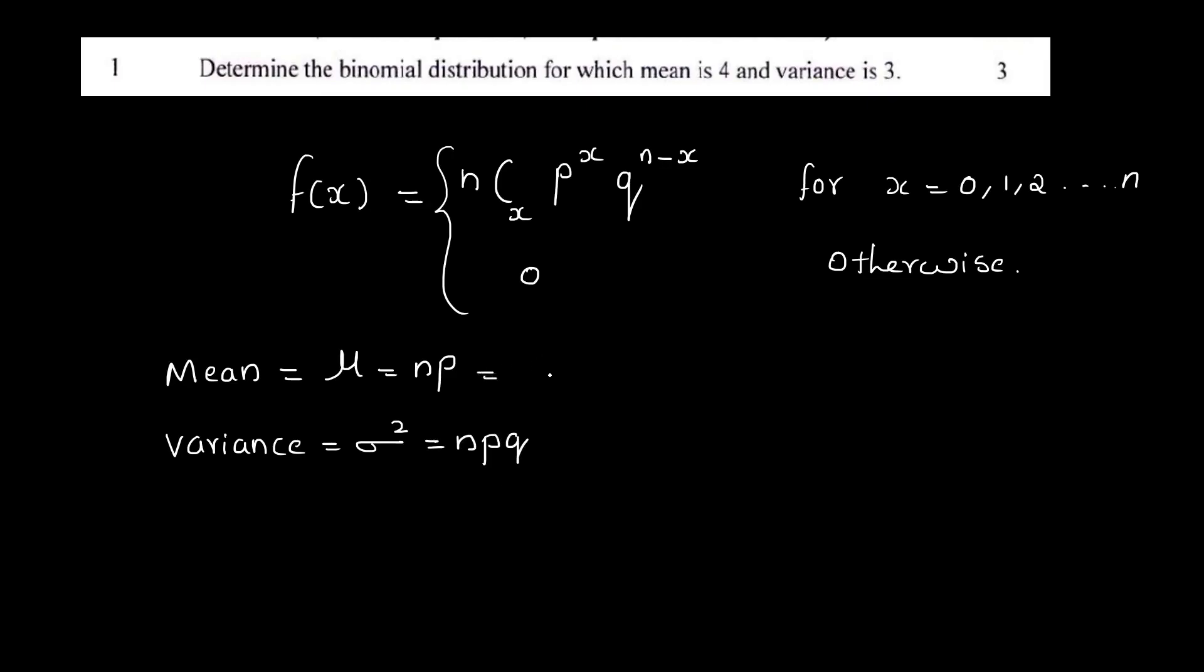Now, np equal to mean 4 and variance equal to 3. Now, you have np=4 and npq is 3. Now, np is constant 4. So, 4q equal to 3. Now, q equals 3 by 4. This is not possible.